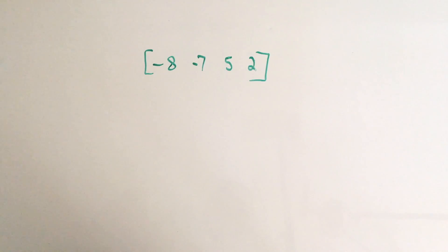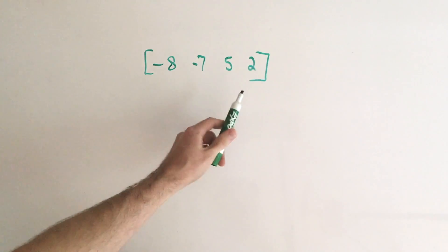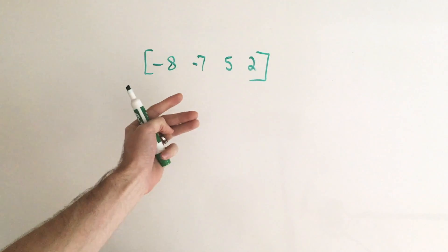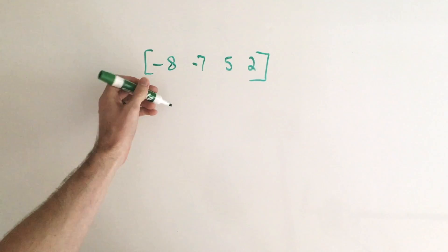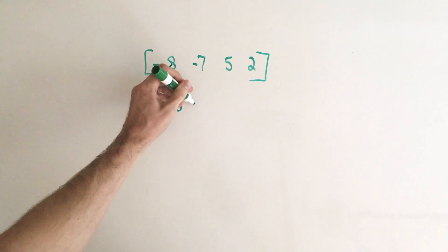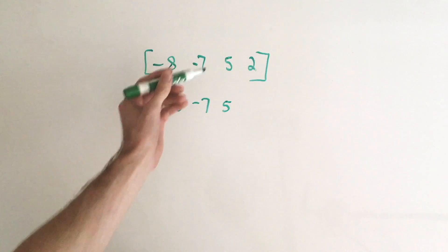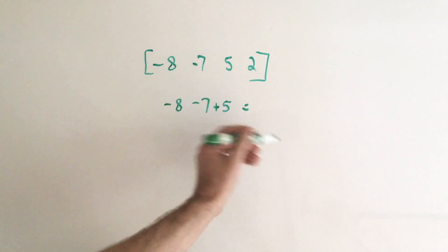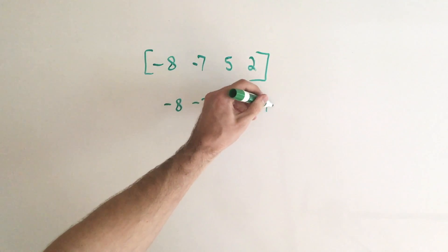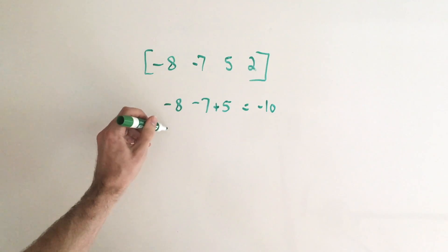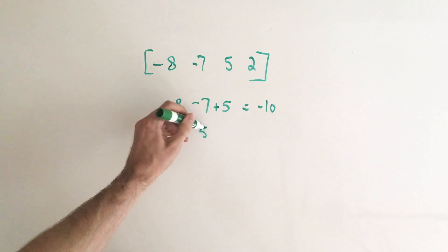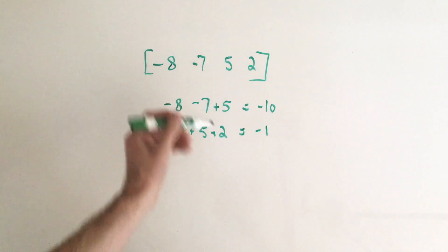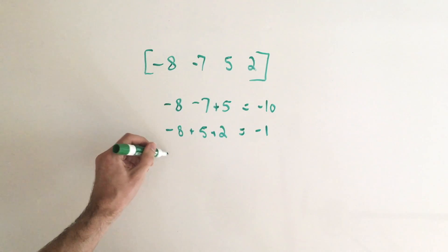So the three-sum problem is defined like so. Given an array or list of numbers, print out all the combinations of three numbers which, when summed up, equate to zero. So for example, if I were to try to choose negative 8, negative 7, and 5 as our first combination, when added together, do these sum up to zero? And this would be no, because we actually get negative 10. So then we can try another combination, such as negative 8, 5, and 2. And when this is summed together, we are left with a negative 1. So again, no, this combination does not sum to zero.